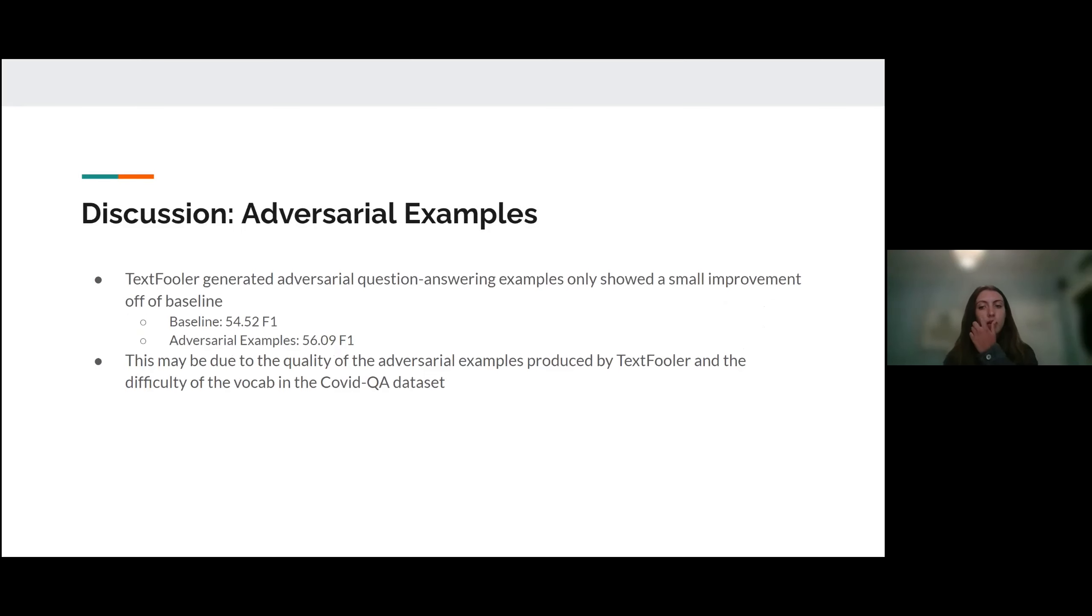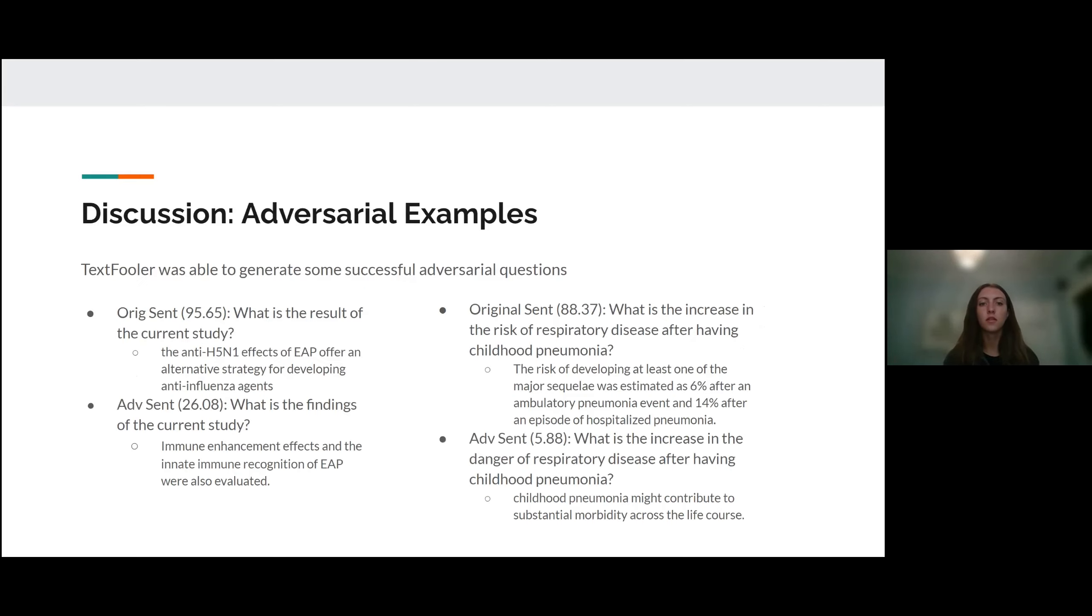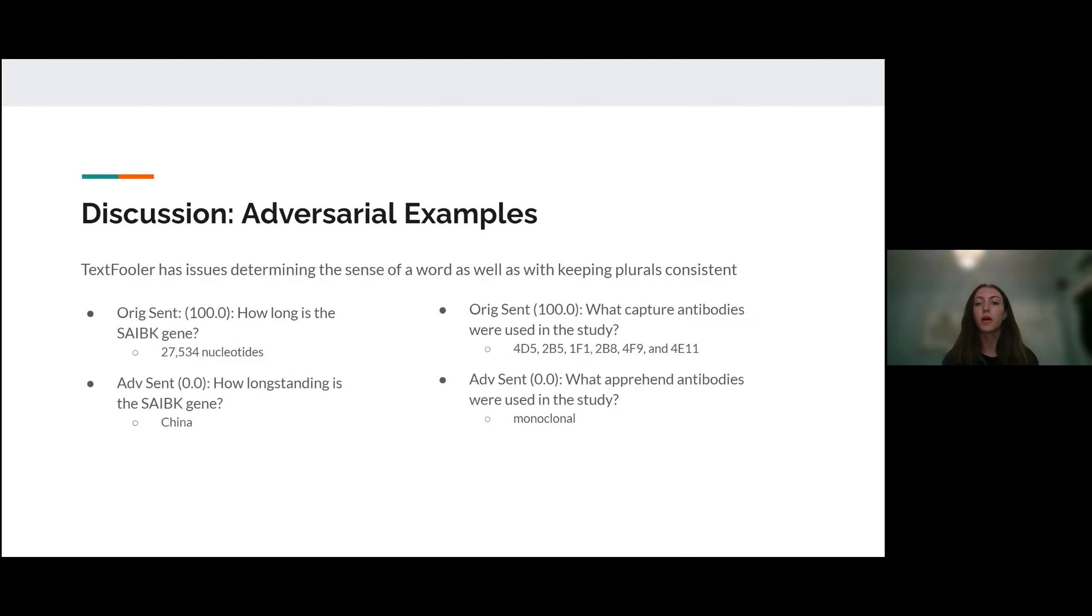So the TextFooler generated adversarial examples only showed a small improvement off of the baseline with the highest achieved F1 score being 56.09. This small improvement may be due to the quality of the adversarial examples produced by TextFooler due to the difficulty of the vocab in the COVID QA data set. TextFooler was able to generate some successful adversarial questions where it changed at least one word in the question and tricked the model into giving an incorrect answer. But TextFooler also had some difficulty with determining the sense of a word as well as keeping plurals consistent.